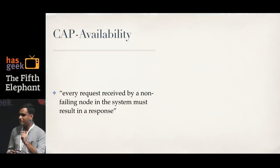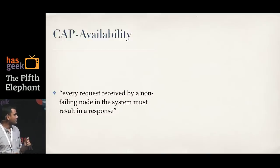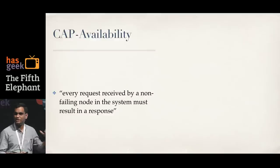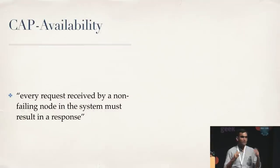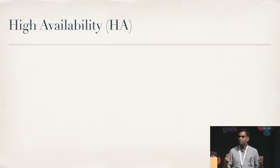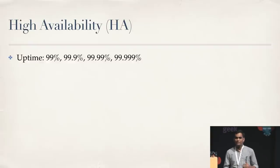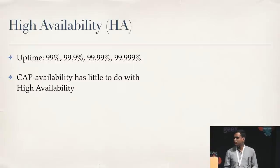Availability also has been defined very precisely in the CAP paper: every request received by a non-failing node in the system must result in a response. Pay attention to the words 'non-failing node' — if any node in a distributed database is up, it should be able to give a response to a read or write request. Everyone wants high availability — it's extremely important — but CAP availability has little to do with high availability.